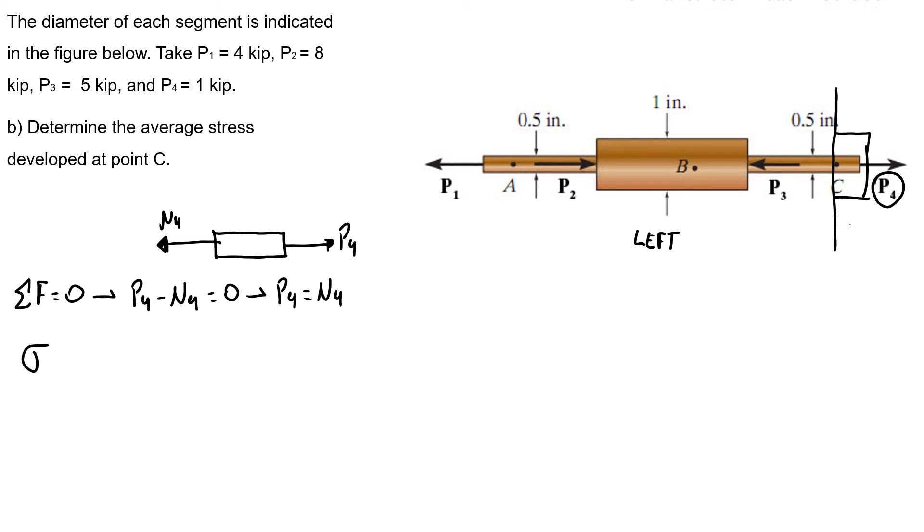So I have P4 minus N4 equals zero, so P4 equals N4. So our average stress at point C, that I call the third stress, equals N4 over area. So I have average stress is 1 over pi over 4 times 0.5 squared. My average stress at point C equals 5.09 ksi.